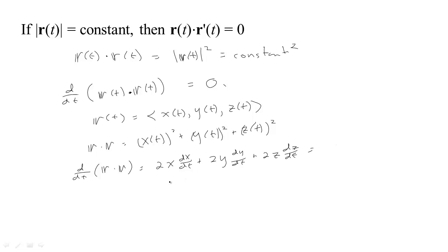Okay, but that is really just 2 times the vector ⟨x, y, z⟩ dotted with ⟨x', y', z'⟩,